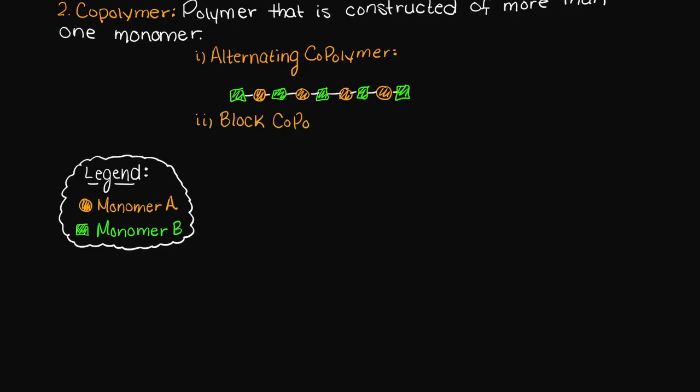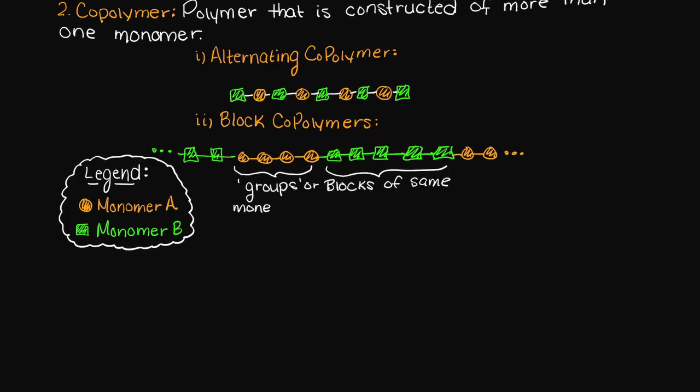Secondly, we could have block copolymers, which are similar to alternating copolymers except that there are groups of either monomer connected together, but they are broken up in an alternating fashion by groups of the other monomer.